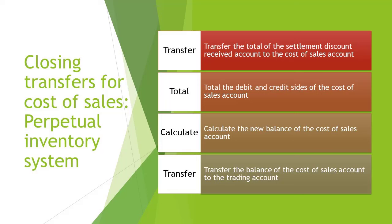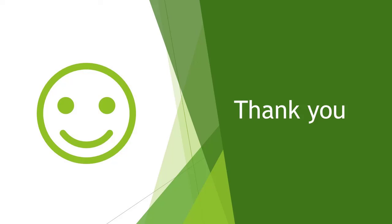In summary, the steps we follow to do all the closing transfers for the cost of sales for a retail entity that applies the perpetual inventory system are: First, transfer the total of the settlement discount received account to the cost of sales account. Second, total the debit and credit side of the cost of sales account. Third, calculate the new balance of the cost of sales account. And lastly, transfer the balance of the cost of sales account to the trading account. You should now be able to close the settlement discount received account and the cost of sales account.